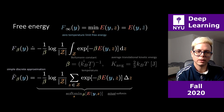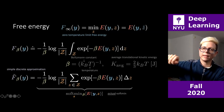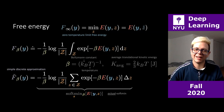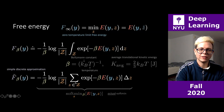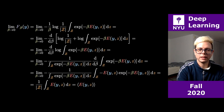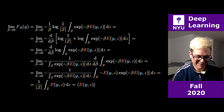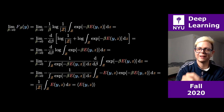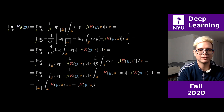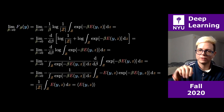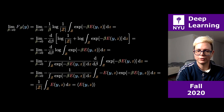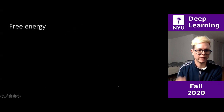Computing the limit of this free energy as beta goes to zero — very high temperature, like on the sun — you end up getting simply the average of the energy across all z values. The derivation is not critical, but it's available for reference. So the most relaxed version is just the average of the energy.